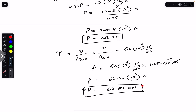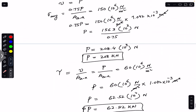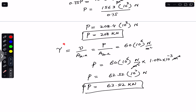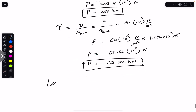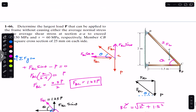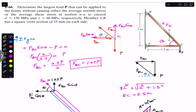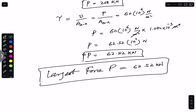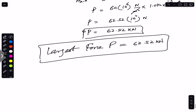Since we want the largest force P, the controlling limit is 62.52 kN, because if P exceeds 62.52 kN, the shear stress at section AA would exceed 60 MPa. So the maximum load P must not exceed 62.52 kN for both conditions to be satisfied.